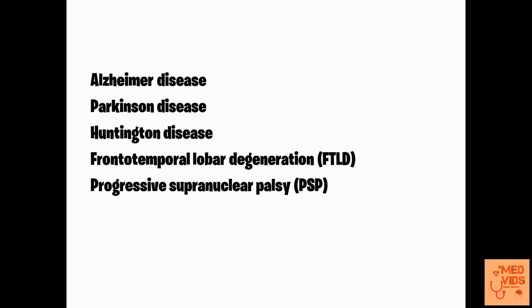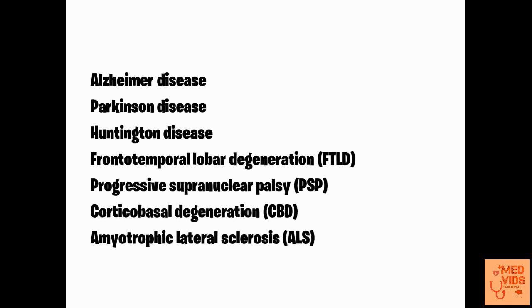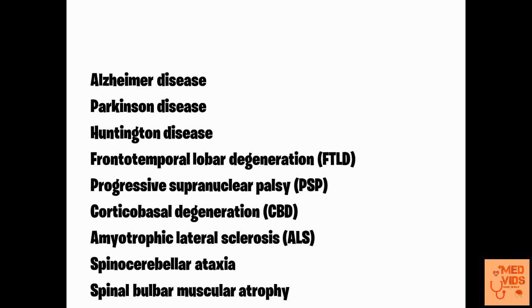Some examples of neurodegenerative diseases include Alzheimer's disease, Parkinson's disease, Huntington's disease, frontotemporal lobar degeneration, progressive supranuclear palsy, corticobasal degeneration, amyotrophic lateral sclerosis (ALS), spinocerebellar ataxia, and spinal bulbar muscular atrophy. These are some of the important neurodegenerative diseases worthy of detailed discussion.